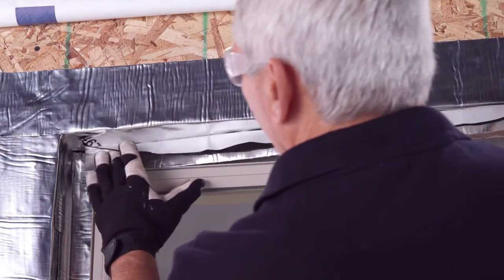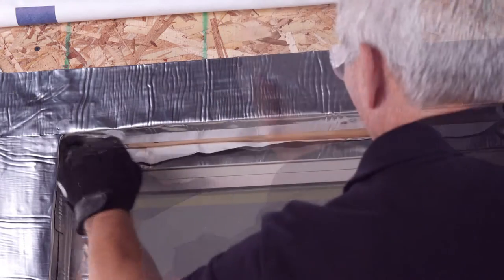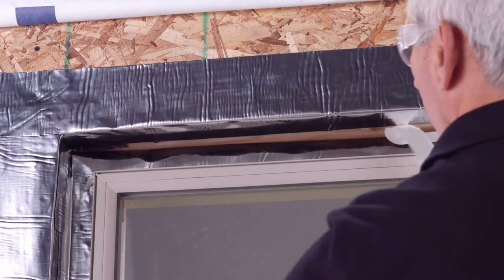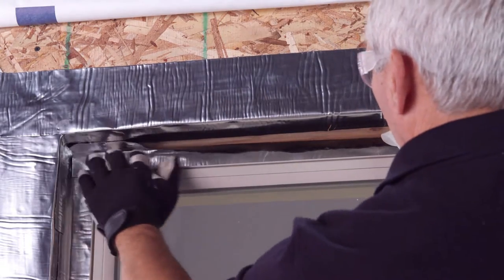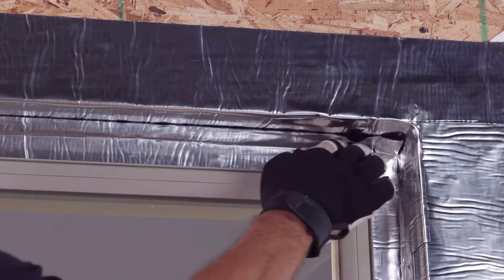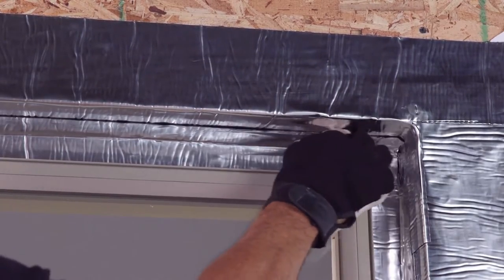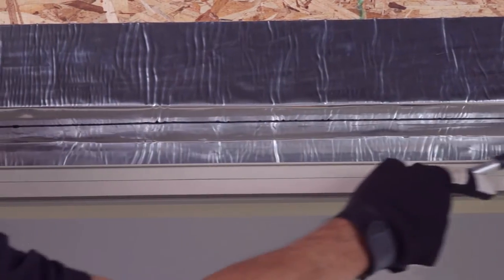Next, apply a second layer of head flashing to cover the window fin, buck edge, and primary head flashing. Make sure the flashing laps the primary jam flashing a minimum of one inch. Use the J-Roller to remove any air pockets.